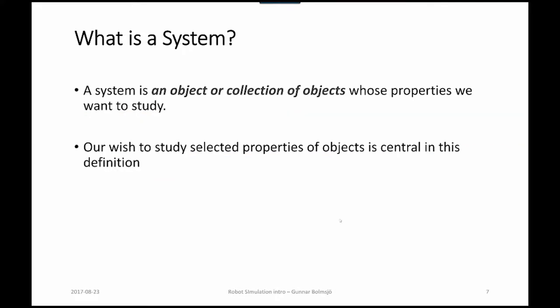What is a system? A system is an object or collection of objects whose properties we want to study during the simulation. And our wishes to study selected properties of objects is central in this definition.